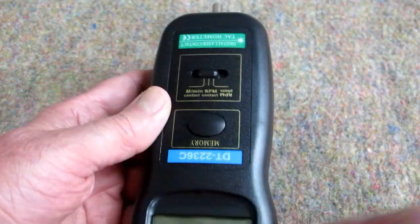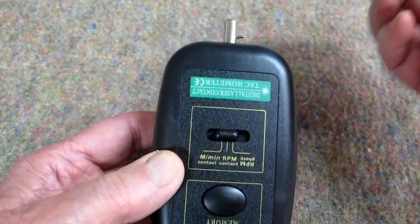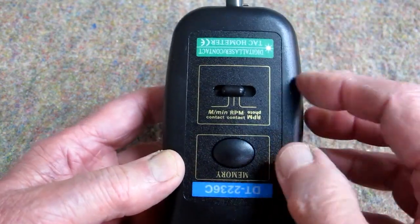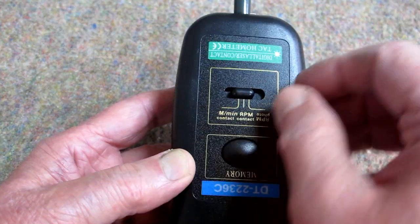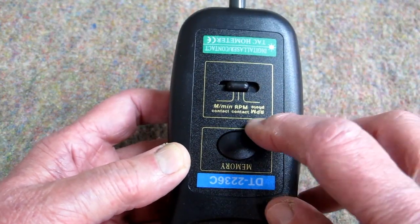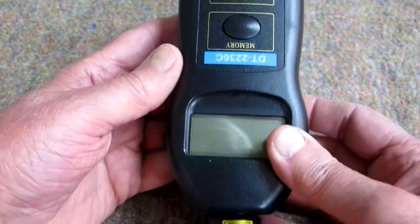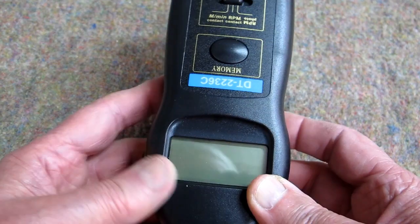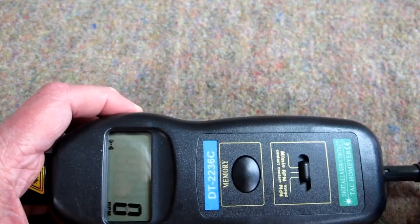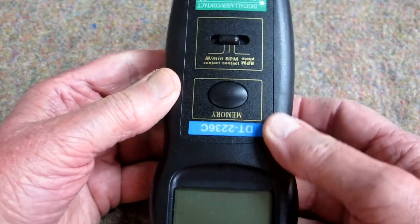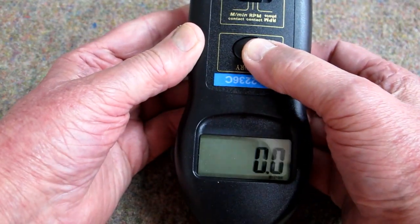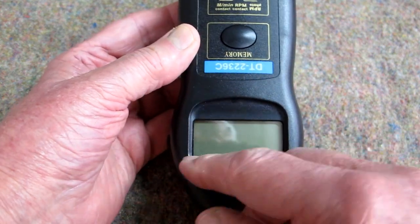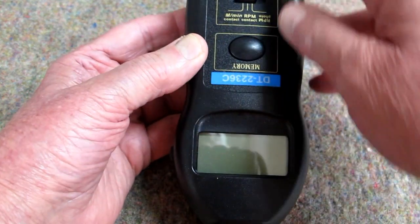If you want to do the contact tachometer, you put one of these pieces on here. And you slide the switch to the center position, which is contact RPM. And again, you have to push this button. When you're pushing that, this is turning and you let go of it. You come back and you push this and it will tell you what the RPM was. And this reads correctly in this position for the contact RPM.